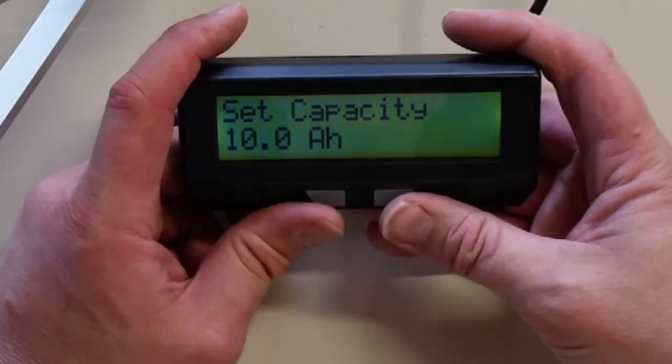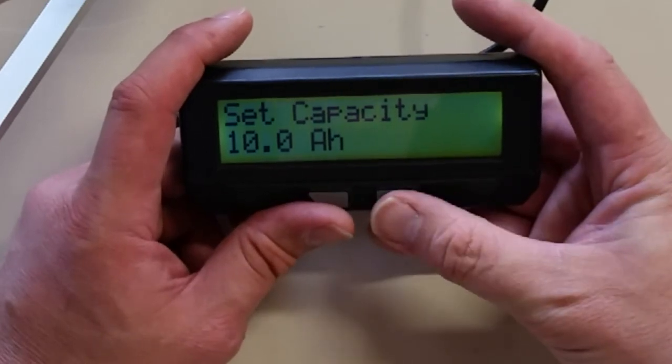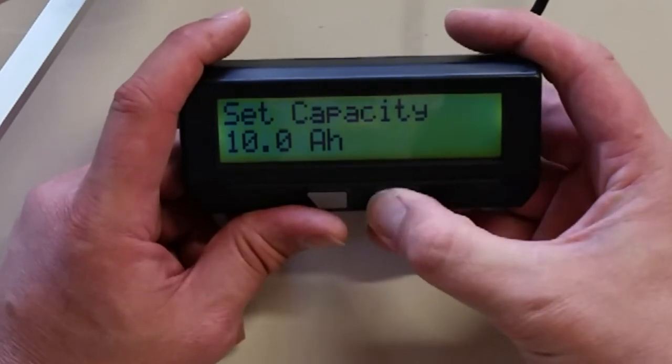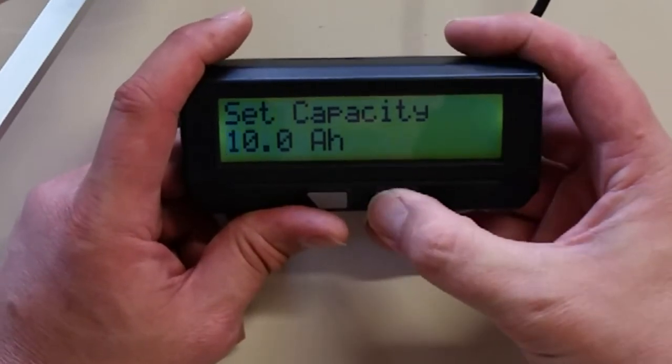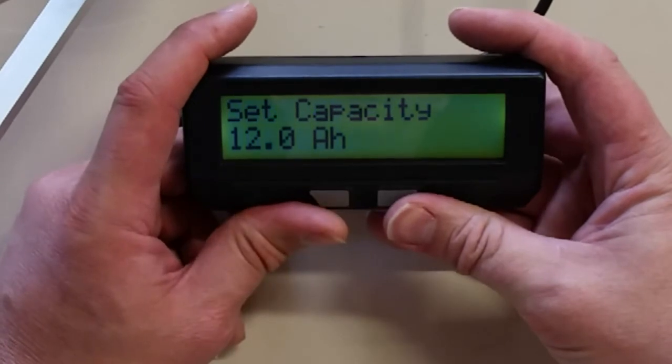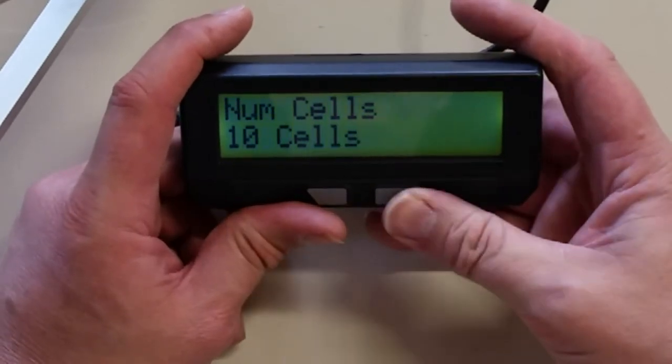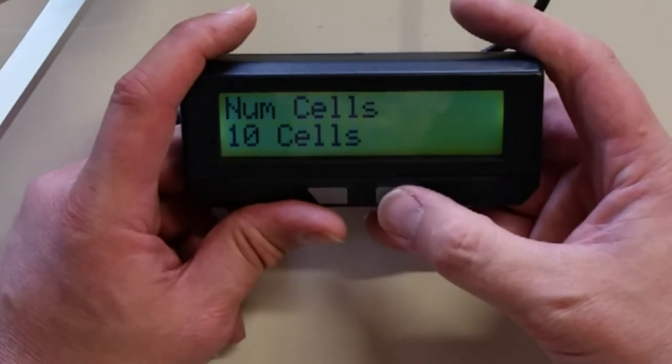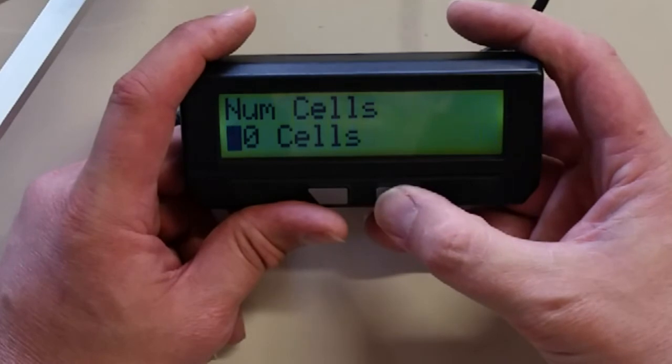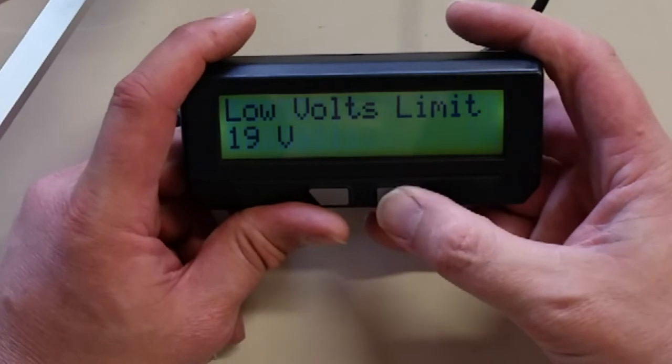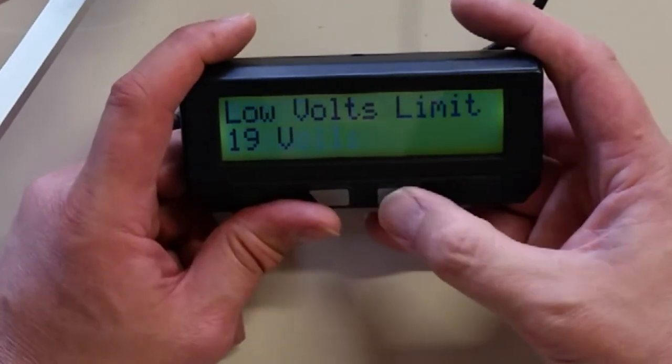And then we're going to set our capacity. My battery here happens to be 12 amp hours. So I'm going to change the amp hours here. We'll keep the 1, raise that to 2, and leave that at 0. So 12 amp hour capacity. And then we have to set the number of cells. So we want to change this to 13. It's 13 lithium cells. So we'll go ahead and change this. 13 cells. Number of cells 13.